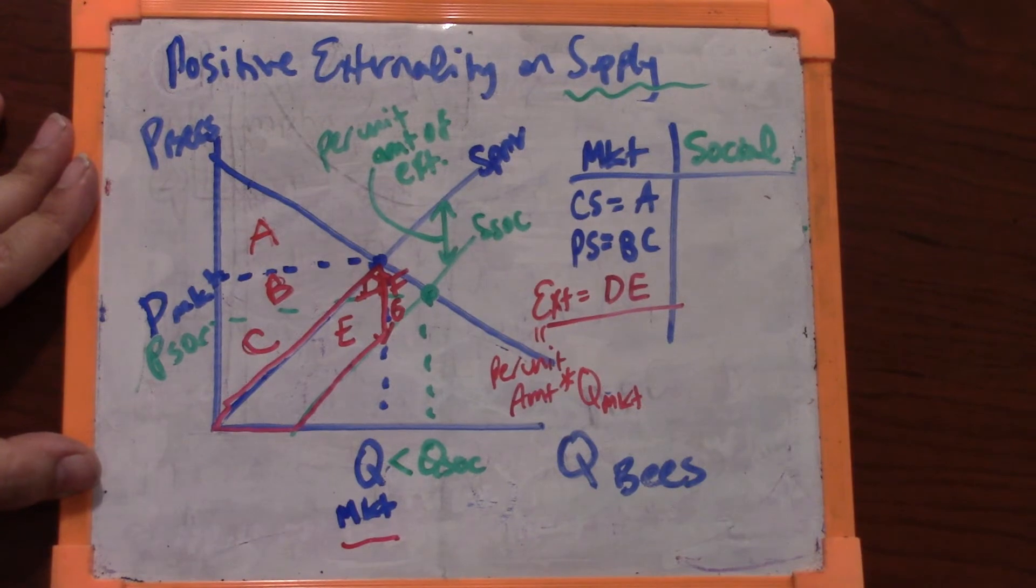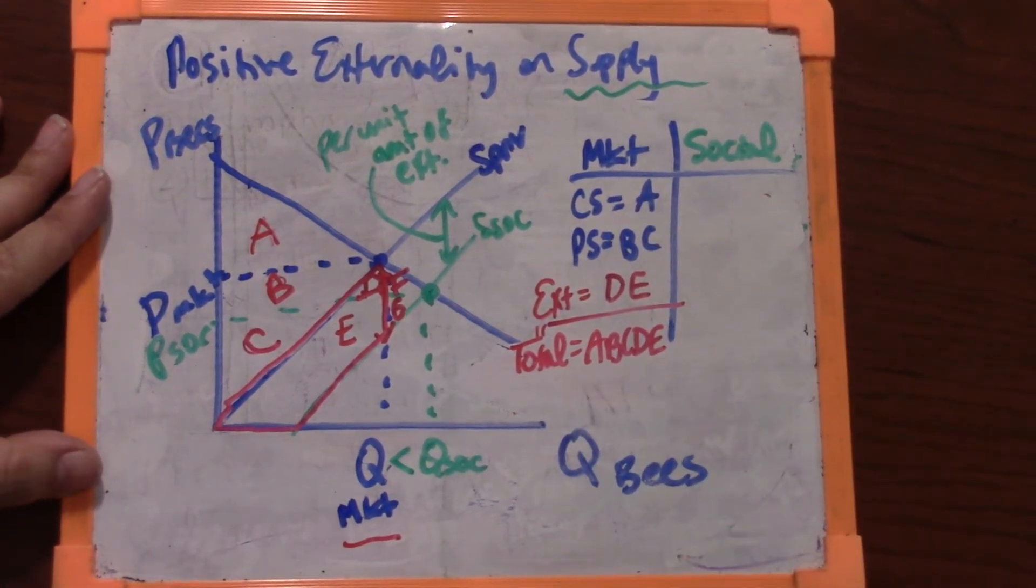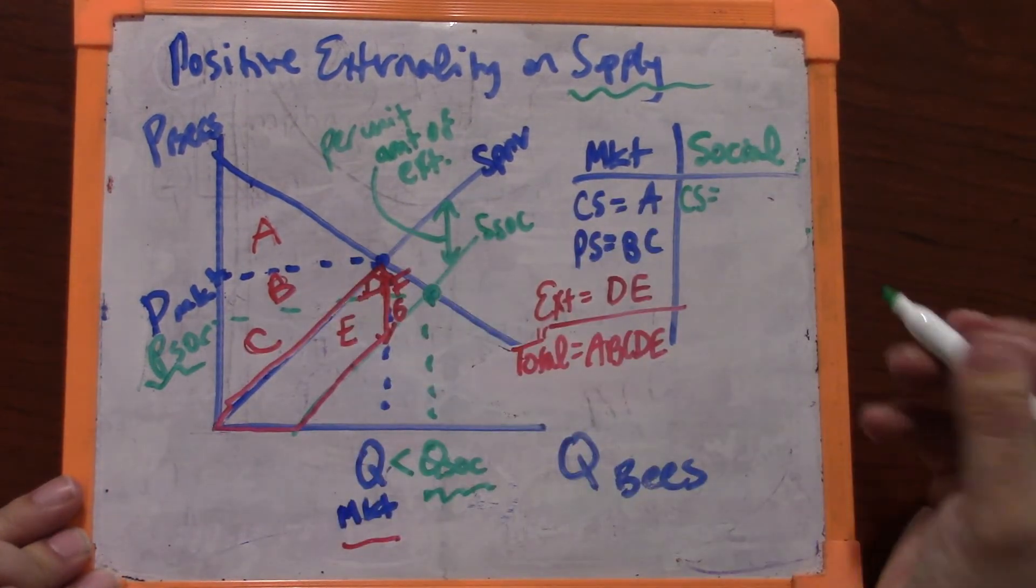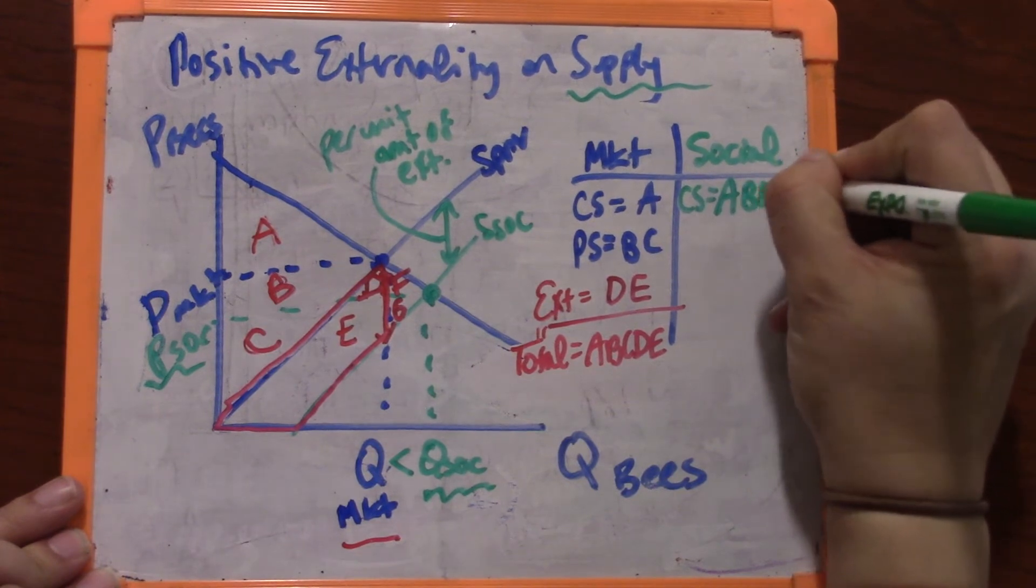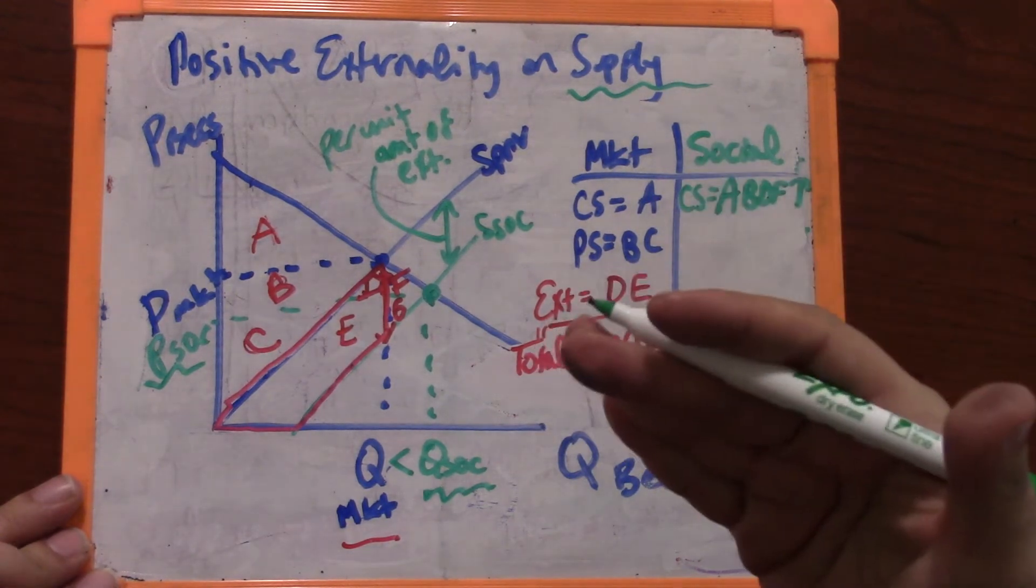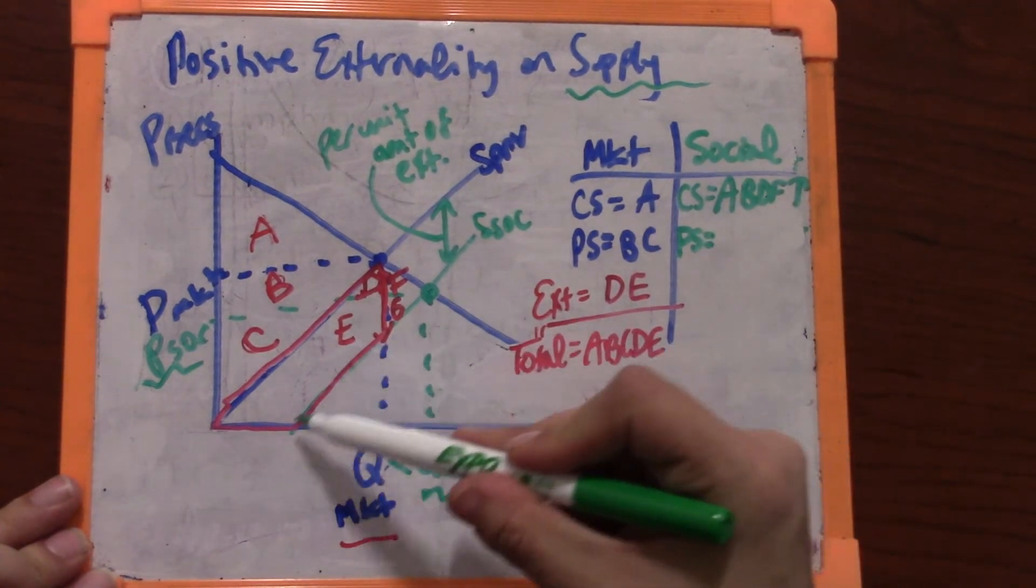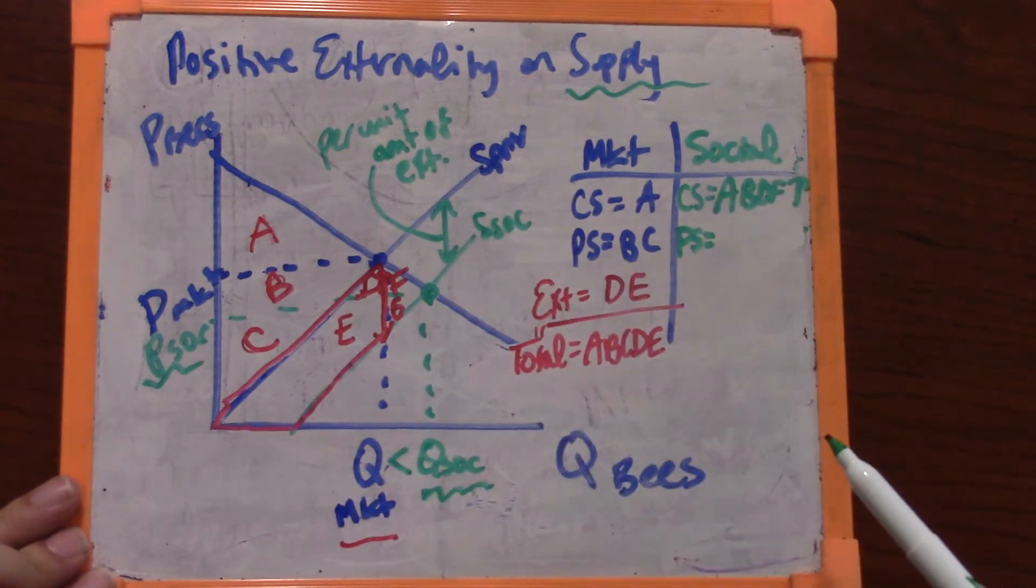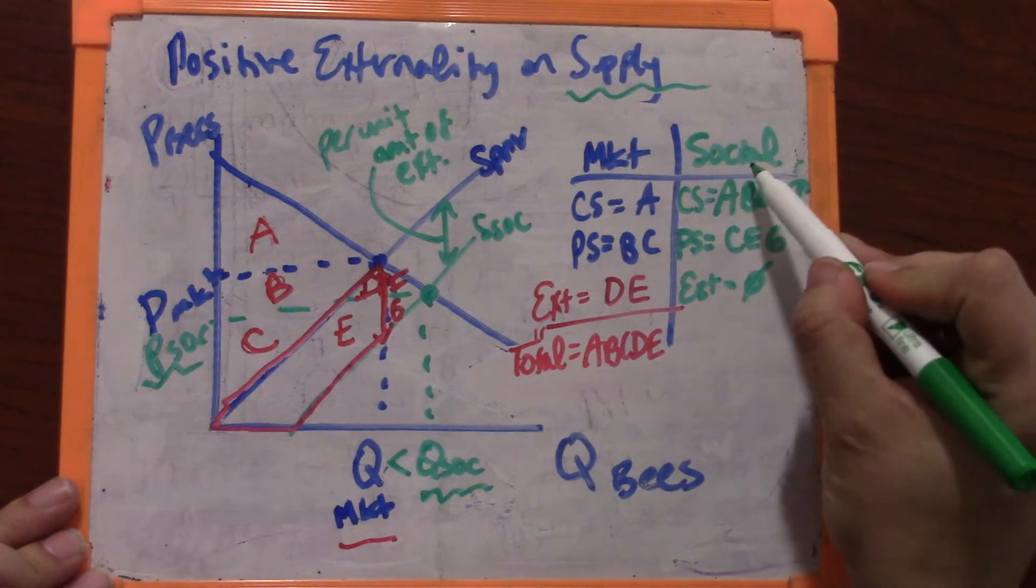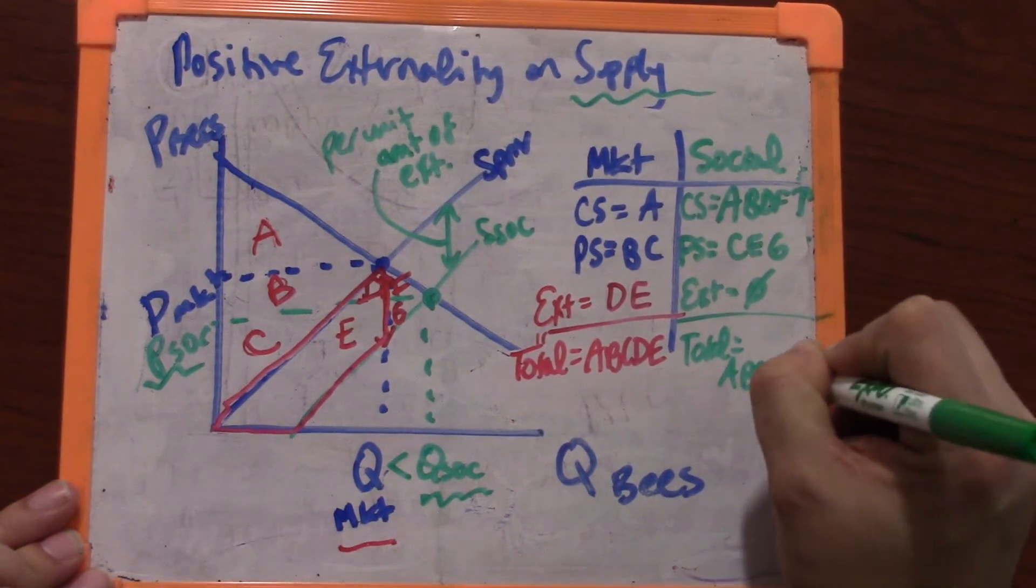At the market, the market quantity is here in blue. The per unit amount is this vertical distance between the curves. The amount of the externality is this little parallelogram right there, DE. So the total that we get in the market is A, B, C, D, and E. At the social outcome, at this quantity and this price, consumers are accepting a much lower price. That means their benefits have gone up. They get A, B, D, and F. Remember the social outcome is where we've done something to recognize the external benefit created by these bees. We've lowered the price for consumers and expanded the market, internalized the externality. Producers now have this lower cost, that's the actual cost of the bees to society, and their price is up here. So they are getting C, E, and G. And the externality is zero at the social outcome. The externality is always zero. We say that we've internalized it. So the total is going to be all the letters: A, B, C, D, E, F, and G.